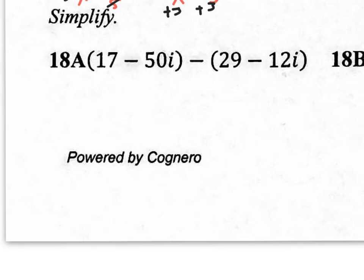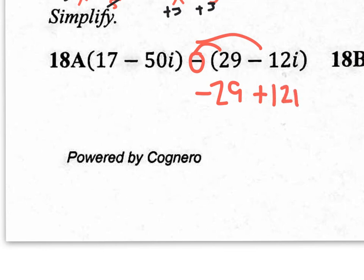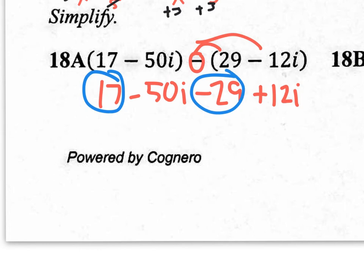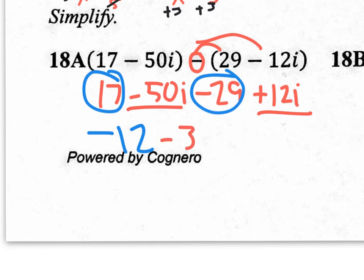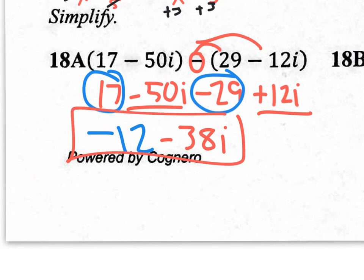For 18A, if you distribute the minus sign, it'll change to negative 29 and positive 12I. Then bring down the 17 and the 50I and combine like terms. For complex numbers, you want the real number first: 17 minus 29 gives negative 12. Then combine negative 50I with positive 12I to get negative 38I. So the answer is negative 12 minus 38I.